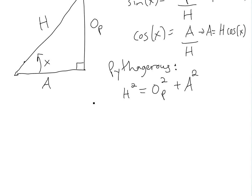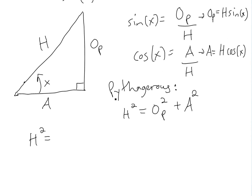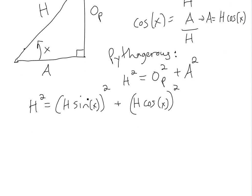So now we'll get h² equals... well, op is h times sin(x). So now we're going to get (h times sin(x))² plus (h times cos(x))² all squared. And then if we were just to... yeah, this is h².